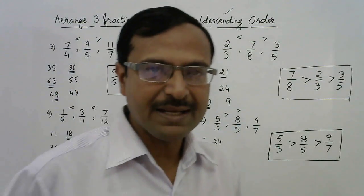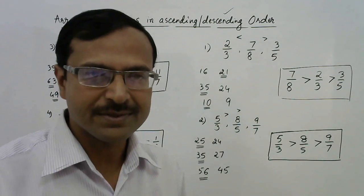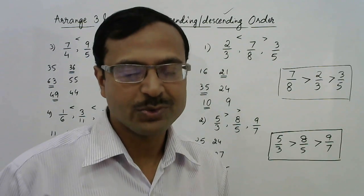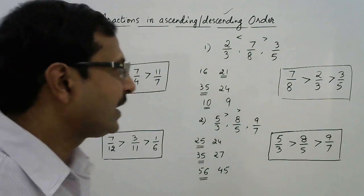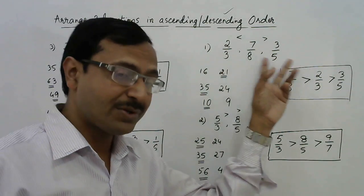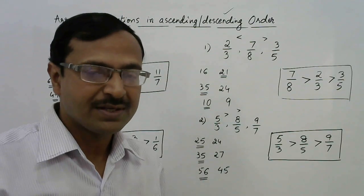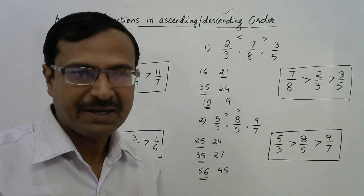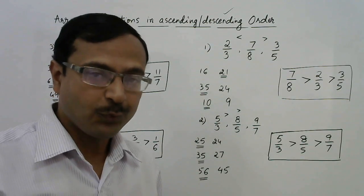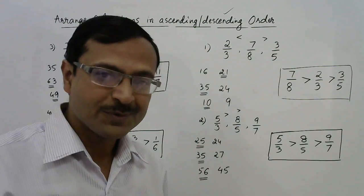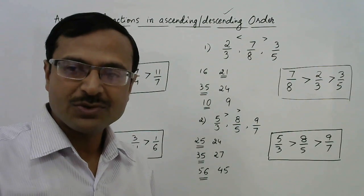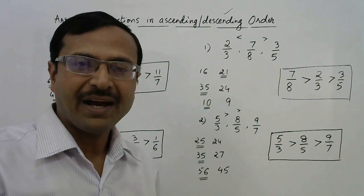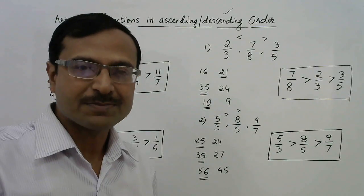This method is going to help you greatly in solving problems on rational numbers. Converting fractions into decimals consumes a lot of time, whereas this is a paperless method — just by observing three fractions you can judge which is greatest, smallest, and which comes in the middle. In subsequent videos I'll cover 4 or 5 fractions. If you like these videos, share them with those preparing for competitions and junior students, and don't forget to subscribe to the channel.